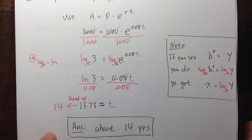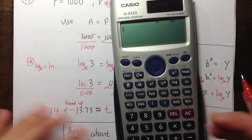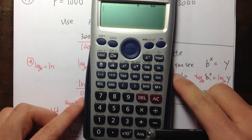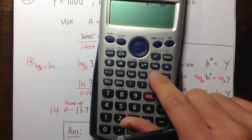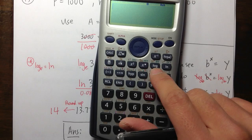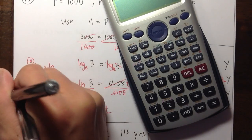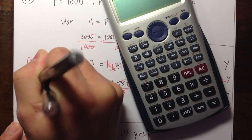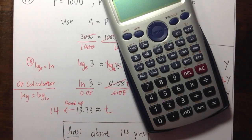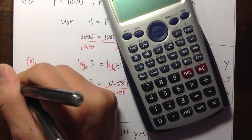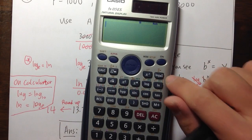Just to introduce this calculator a bit more: on most calculators you only see the log and the ln buttons. The regular log on the calculator means log base 10, and the ln key means log base e.